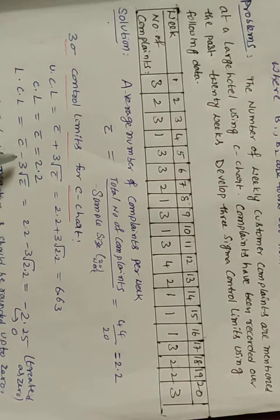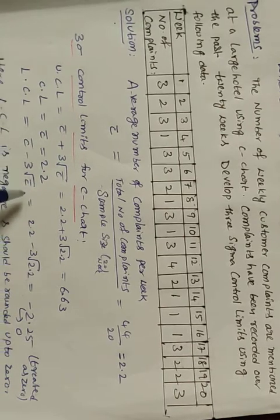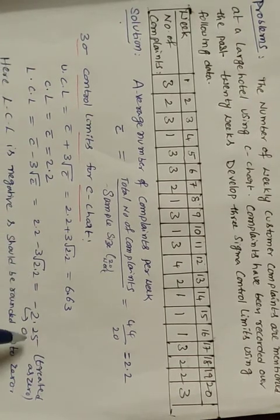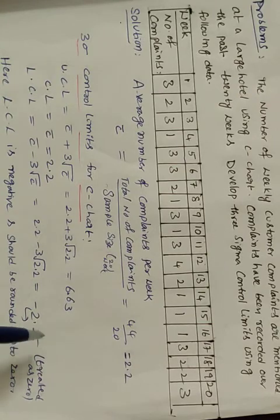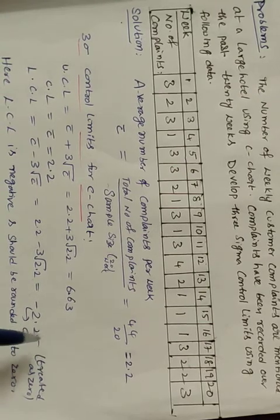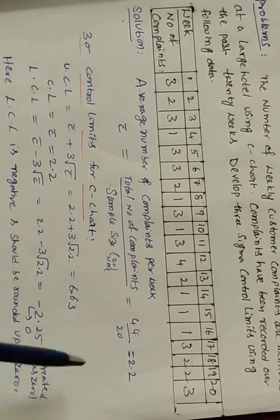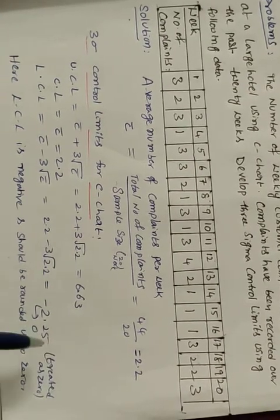LCL equals c-bar minus 3 times the square root of c-bar, which gives 2.2 minus some value. Since the result is negative, LCL is taken as 0.